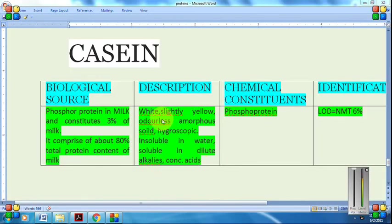For description: it is white, slightly yellowish, odorless, amorphous solid, and highly hygroscopic. It absorbs moisture very quickly and has very good moisture retention capacity. This is why storage must be very careful, otherwise lumps will form. For solubility: it is insoluble in water but soluble in dilute alkalis and concentrated acids. However, it precipitates from dilute acid solution.